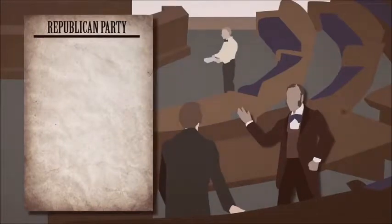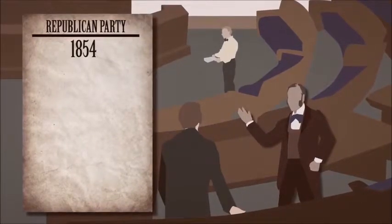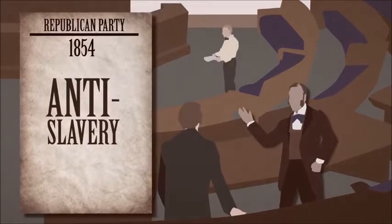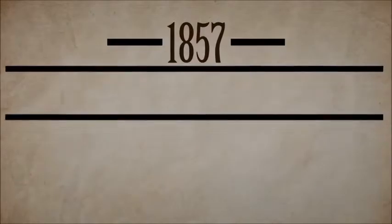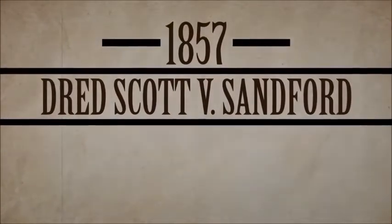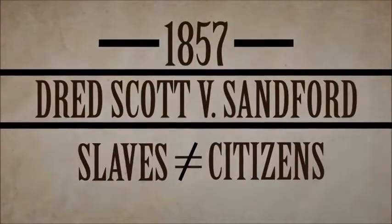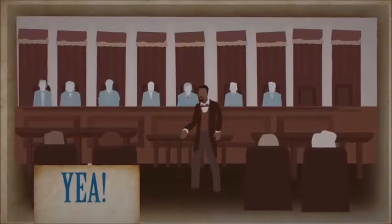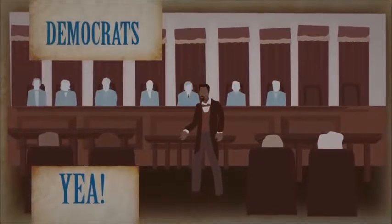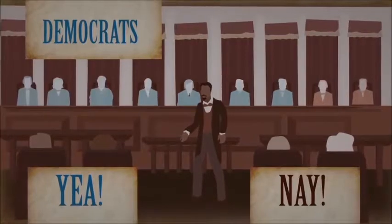In contrast, the Republican Party was founded in 1854 as an anti-slavery party. Its mission was to stop the spread of slavery into the new Western territories with the aim of abolishing it entirely. This effort, however, was dealt a major blow by the Supreme Court in the 1857 case Dred Scott v. Sandford. The court ruled that slaves aren't citizens — they're property. The seven justices who voted in favor of slavery: all Democrats. The two justices who dissented: both Republicans.